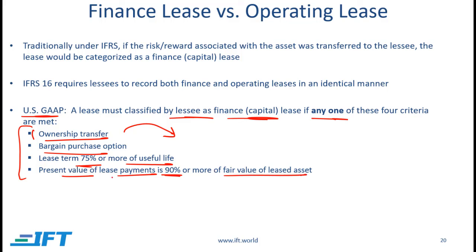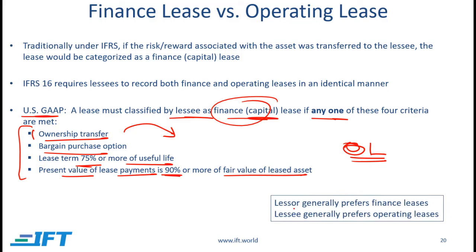If any of these conditions hold, then under US GAAP a lease is classified as a finance lease and the asset is shown on the balance sheet of the lessee. If all these criteria are not met, then a lease is classified as an operating lease under US GAAP, and in this case lease payments are essentially rental payments. In general, a lessor will prefer finance leases and a lessee will prefer operating leases.